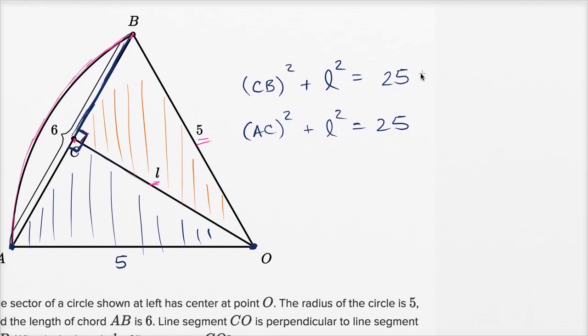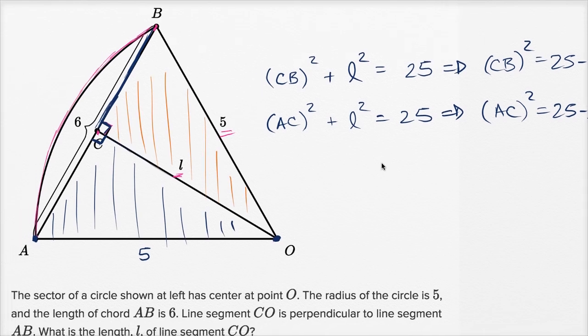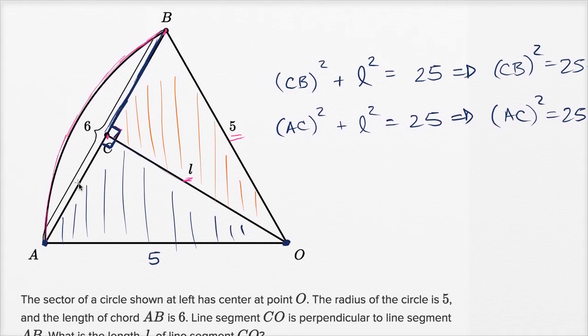So we could say if we subtract L squared from both sides, that CB squared is equal to 25 minus L squared. And we could write that AC squared is equal to 25 minus L squared. And so these two things are going to be equivalent. This is going to be equivalent to that right over there.